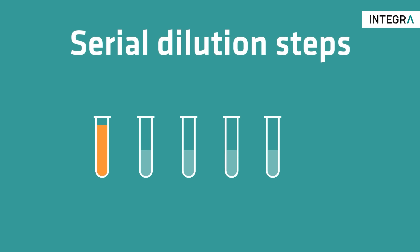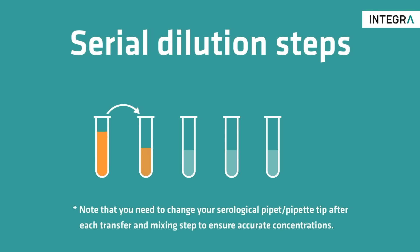Ensure that the sample, reagent, chemical, or compound that you want to dilute is well mixed, then transfer a defined volume — for example, 1 milliliter — to the first tube. Thoroughly mix the first dilution, then aspirate the same transfer volume that you used in the previous step and dispense it into the second tube. Extend the process of mixing the most recently obtained dilution and transferring some of it to the next tube until you get to the end of your serial dilution experiment.